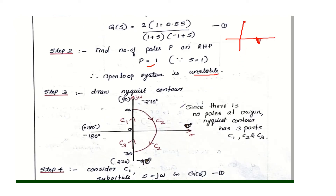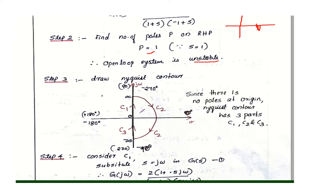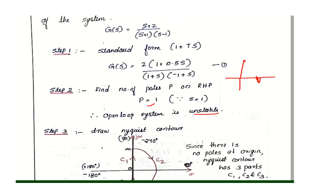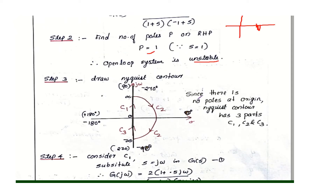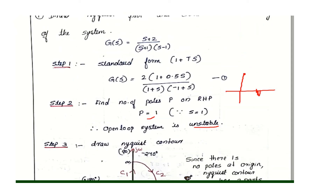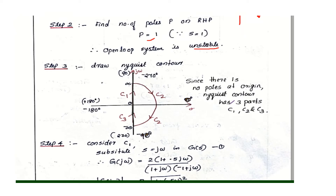Step 3: Set up the Nyquist contour. We generalize it into four parts: C1, C2, C3, and C4. Since there is no pole at the origin, C4 is not needed. We only need to convert C1, C2, and C3 to the Nyquist plot.